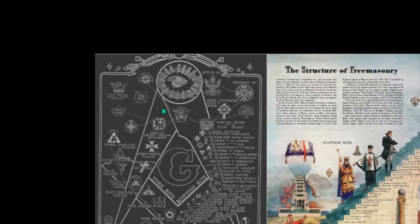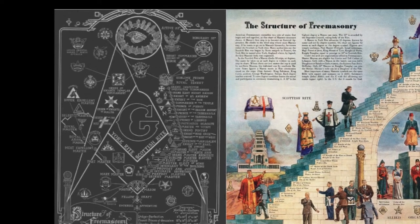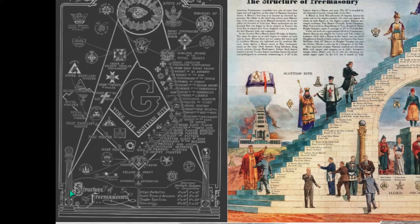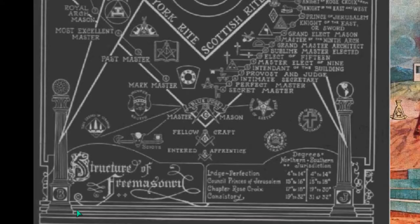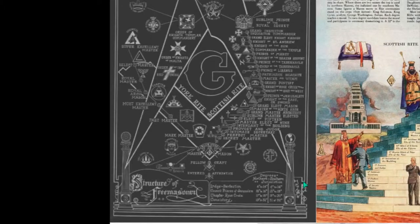Ladies are involved as well — we'll see that in the next slide. You can also see here the two pillars of Freemasonry, with B and J placed there.